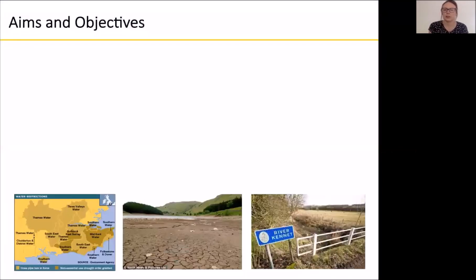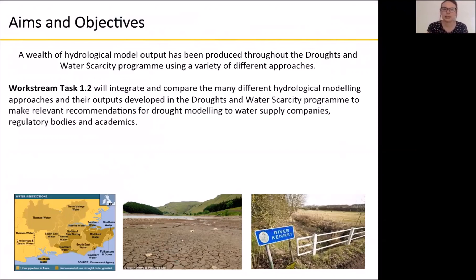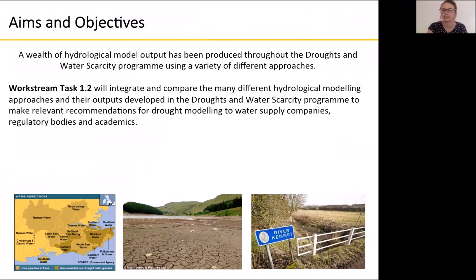The aims and objectives of the hydrological modelling in Endows relate to the fact that during the Droughts and Water Scarcity programme, a wealth of hydrological model output was produced using a real variety of different approaches, including different models and different setups. The aim of this part of Endows is to integrate and compare the many different hydrological modelling approaches and their outputs, and make relevant recommendations for drought modelling to water supply companies, regulatory bodies and academics.